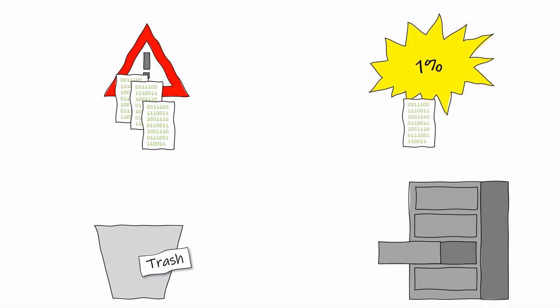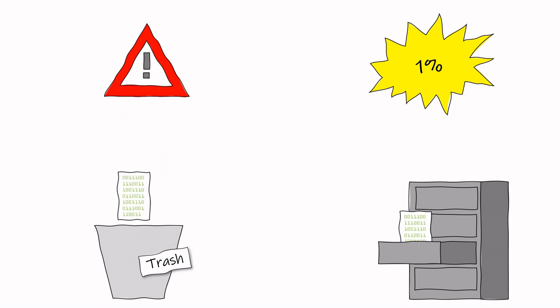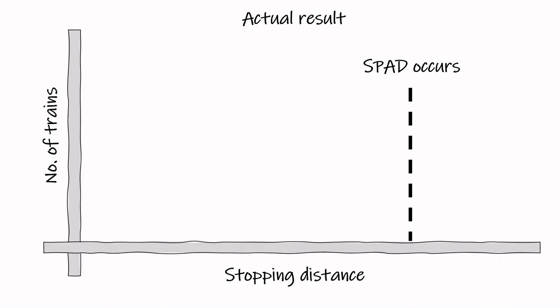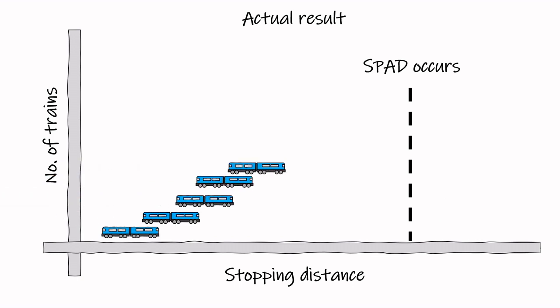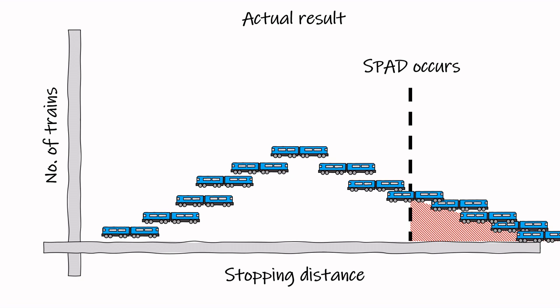By ignoring normal work, we ignore 99% of the data. If we move away from thinking about safety as a binary outcome and instead find ways to directly measure variation in performance before incidents happen, we will be able to predict where incidents are likely to occur. These will be the areas of work where our people and processes experience wide variations in performance beyond which our systems can cope with — whether our process is driving trains or creating fuels and generating energy.